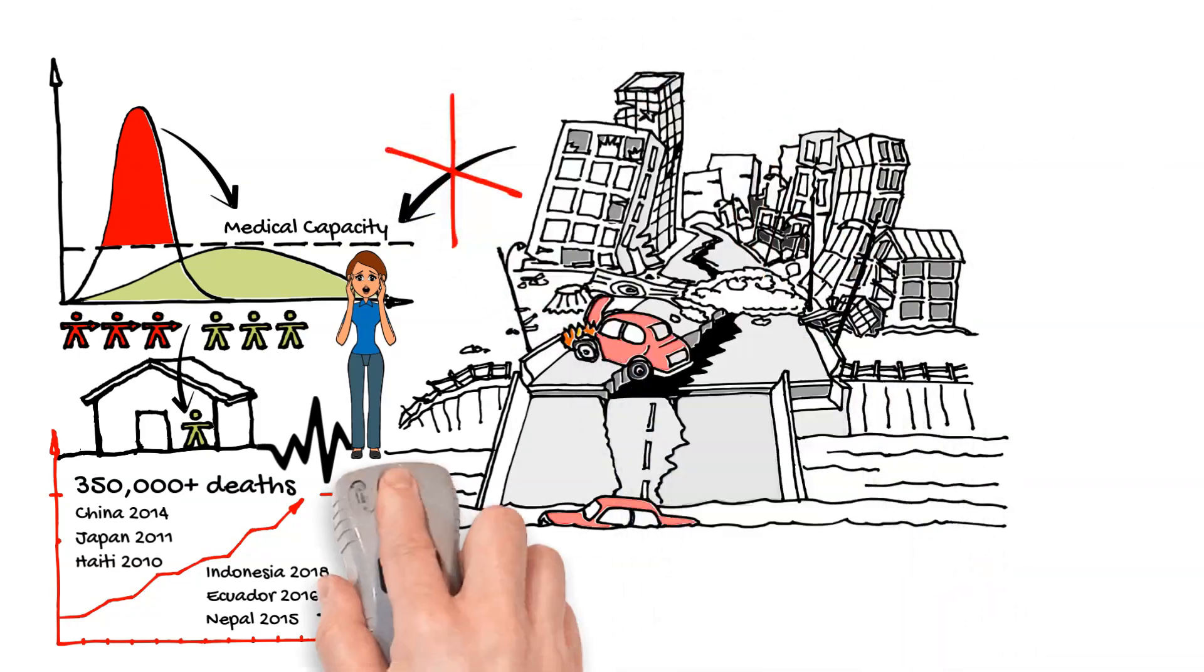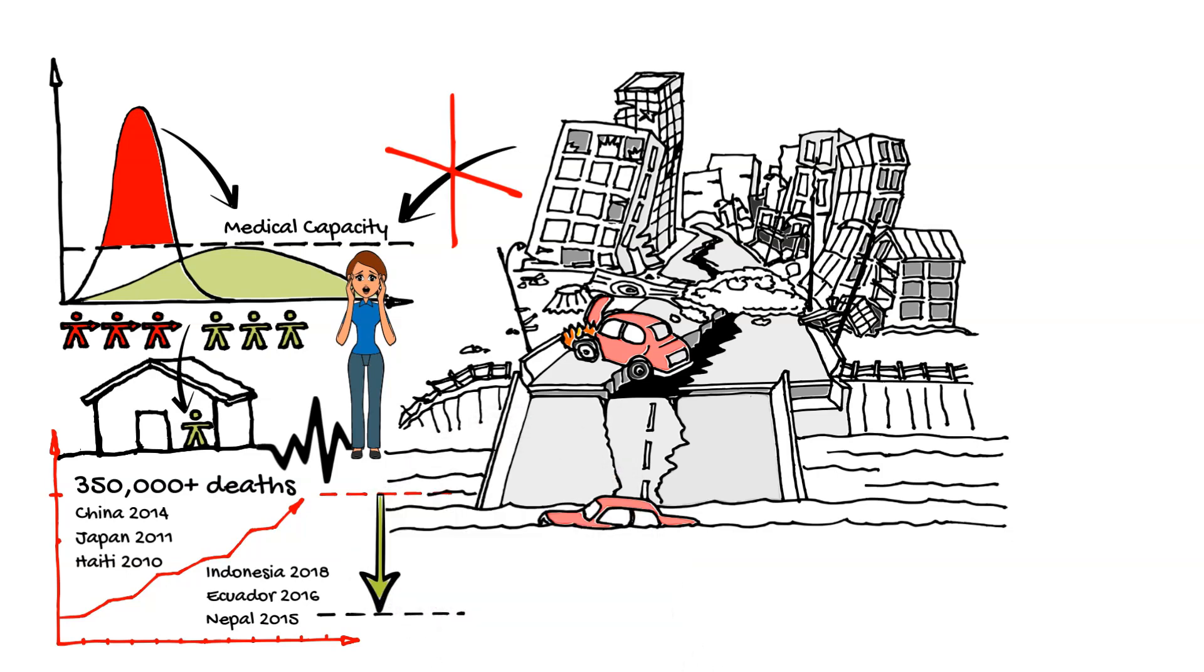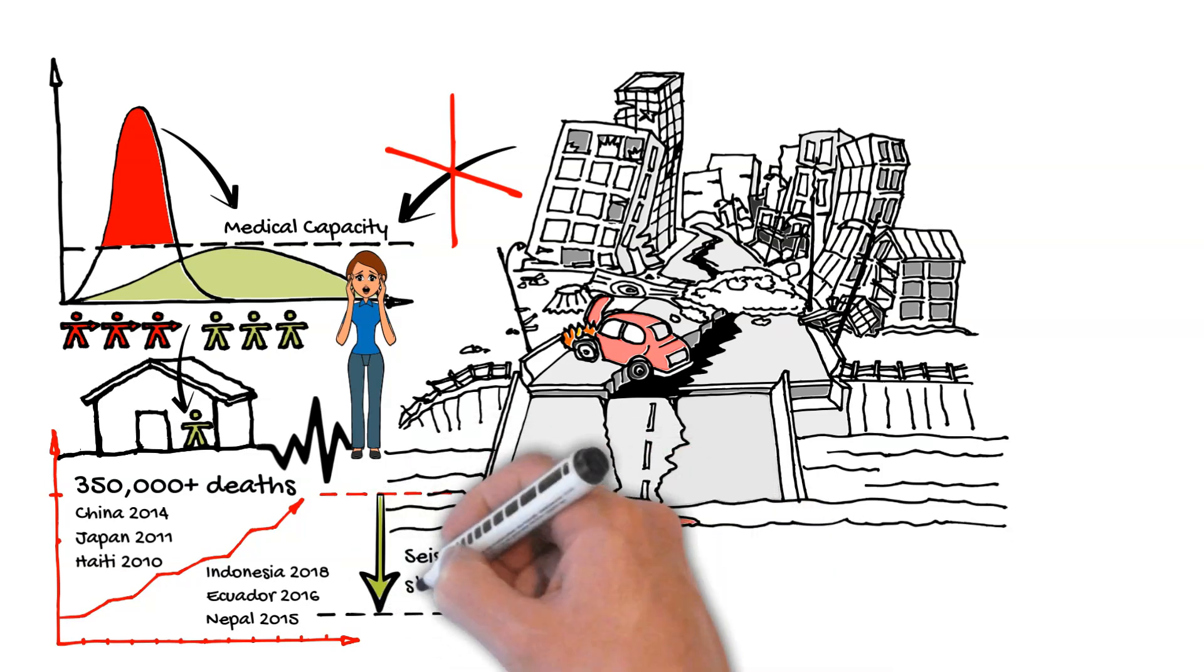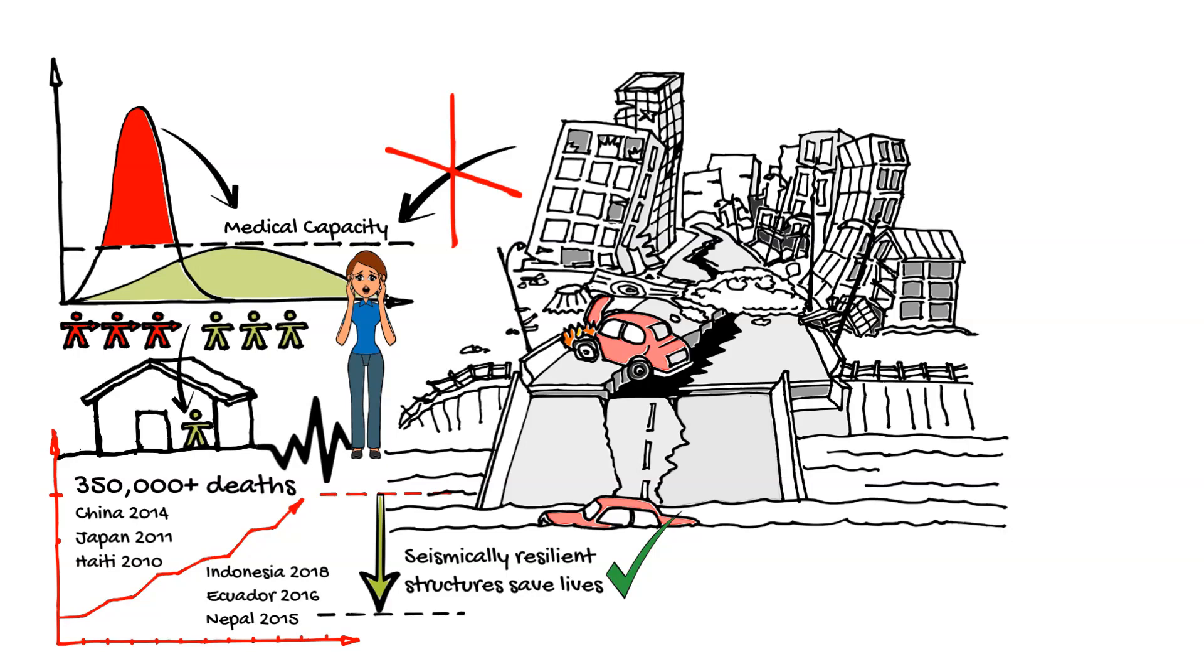We can't flatten the earthquake curve, as in the case of an epidemic, but we can significantly lower its peak through design and construction of seismically resilient structures.